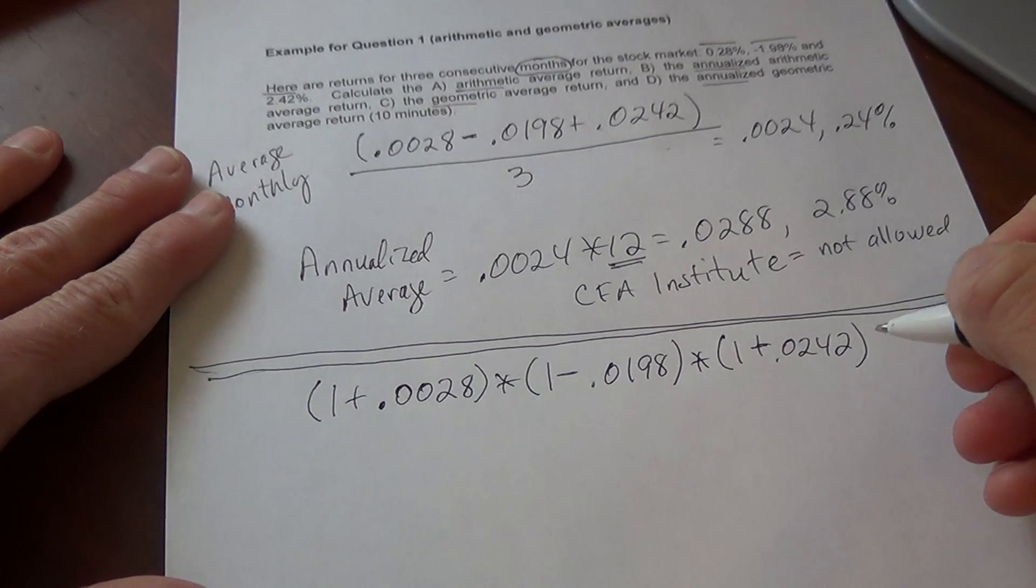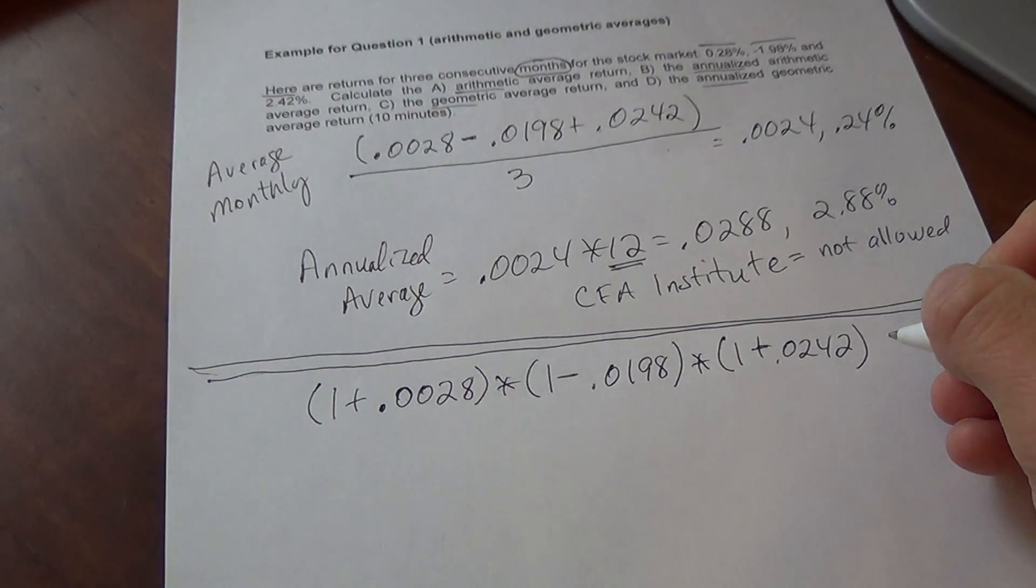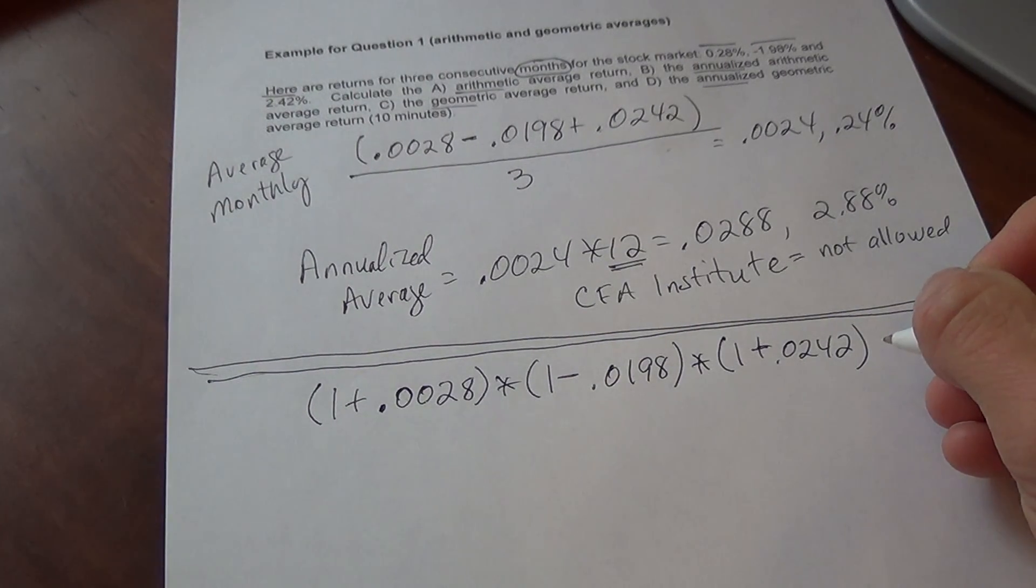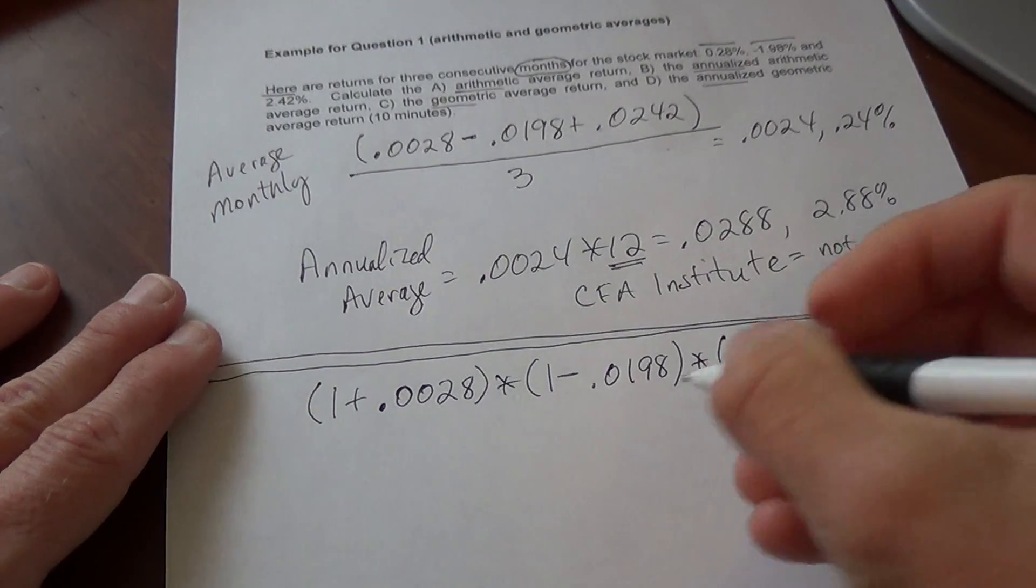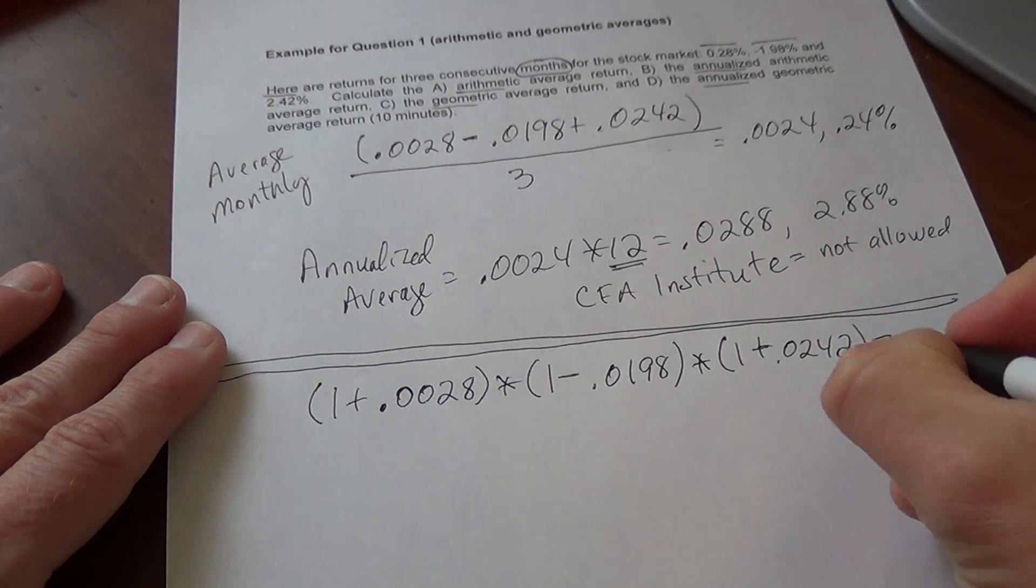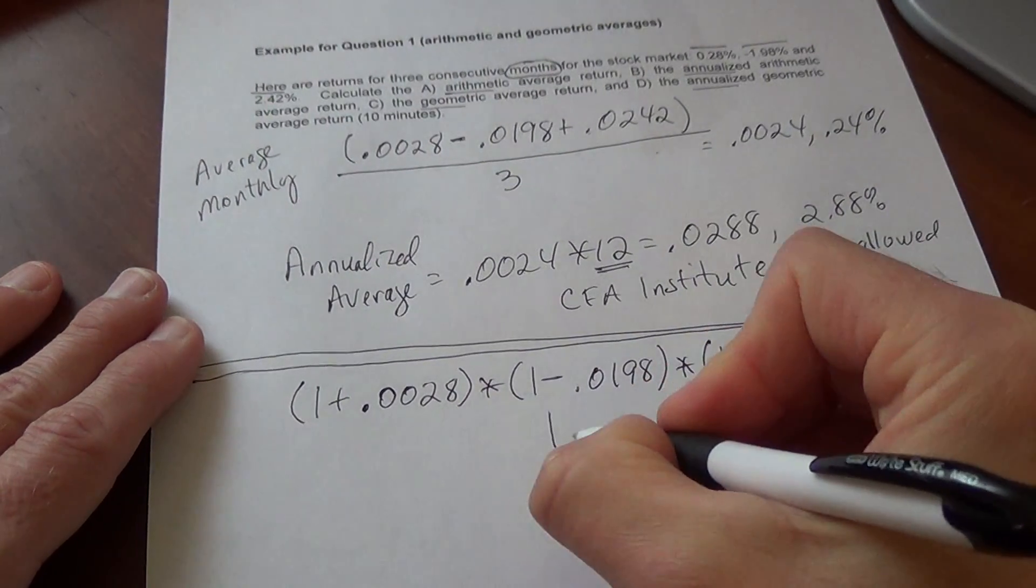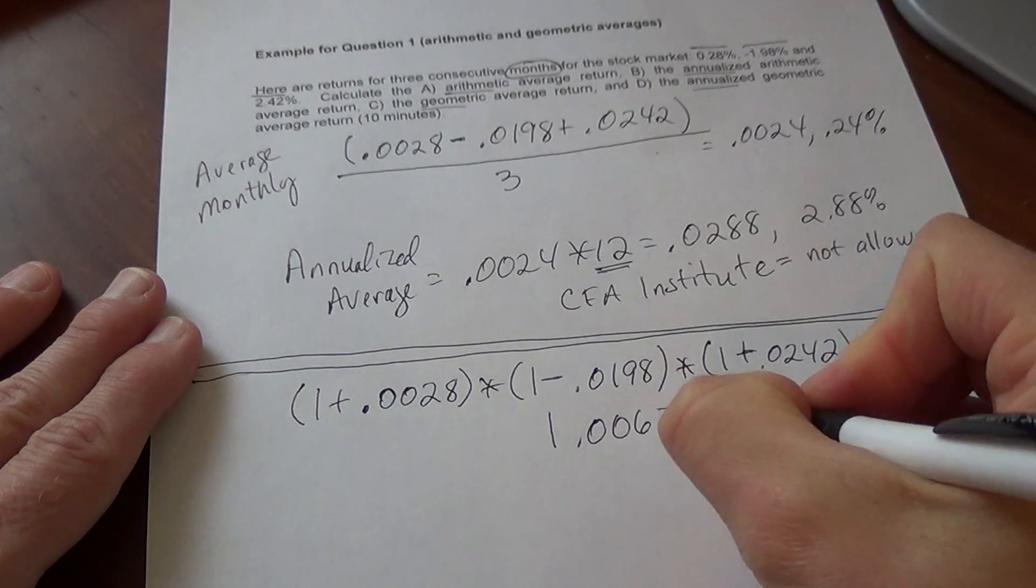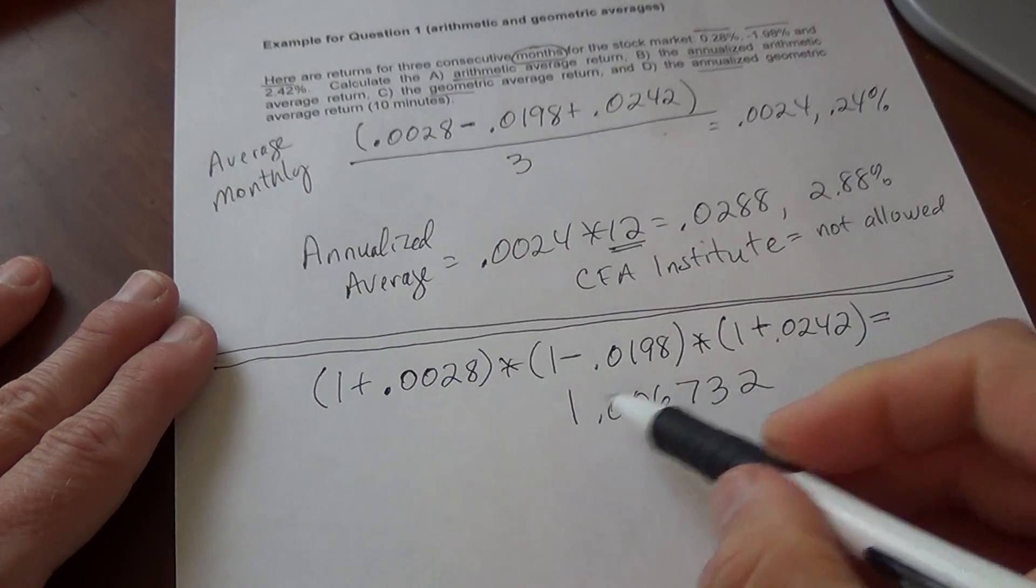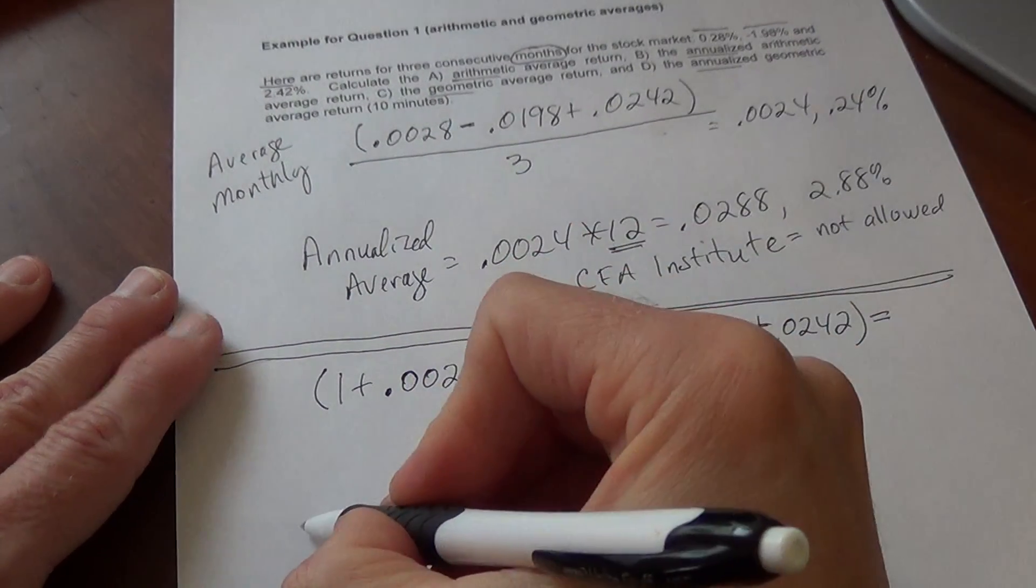And we take all of that, we'll raise all of that to... Well before we do that, let's take the product of that. The product of that is 1.006732. And I'll show you, you'll see here in a minute why it's good to have this number.